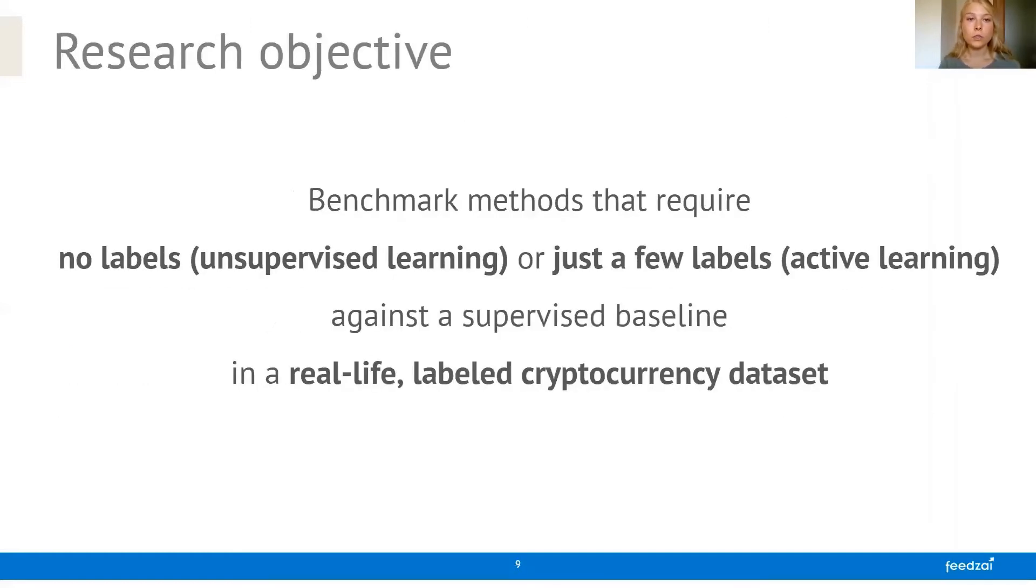So the research objective for us in order to move closer to an efficient and practical AML setting was to benchmark methods that require either no labels or just a few labels and benchmark them in a real-life labeled cryptocurrency data set. And we're comparing our result against a supervised baseline in order to see the trade-offs between the number of labels that we have and our classifier performance.